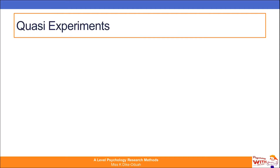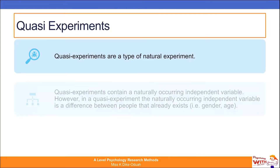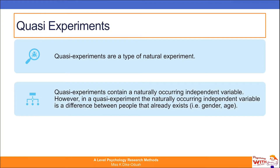Quasi experiments — pronounced however you prefer, as long as you spell it correctly — are a type of natural experiment. You might want to think of natural experiments as the umbrella term, with quasi coming underneath it. Quasi experiments contain a naturally occurring independent variable; however, in a quasi experiment, the naturally occurring independent variable is a difference between people that already exists — for example, gender and age.